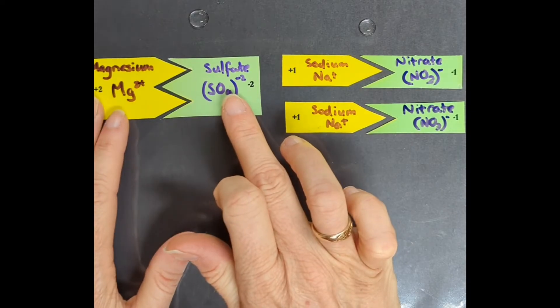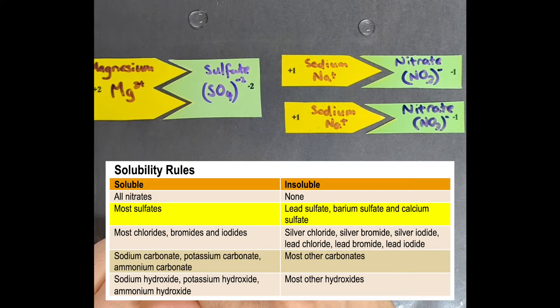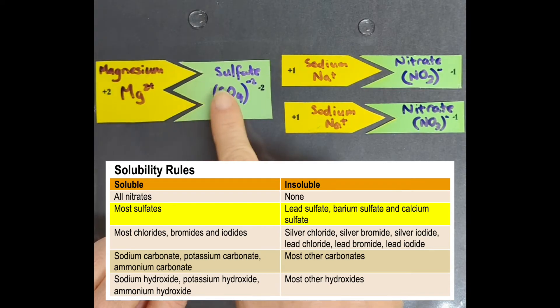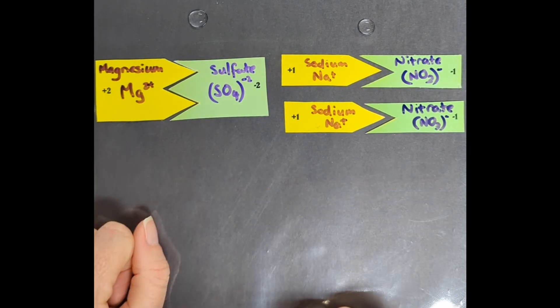We need to go and have a look firstly at the sulfates. It says that most sulfates are soluble. They don't drop out of solution and form a solid. The only ones that do are lead sulfate, barium sulfate, or calcium sulfate. The rest of them don't form a solid when you mix them. So this guy here, magnesium sulfate, from that table it says that he is not going to form a solid and drop out of the solution.